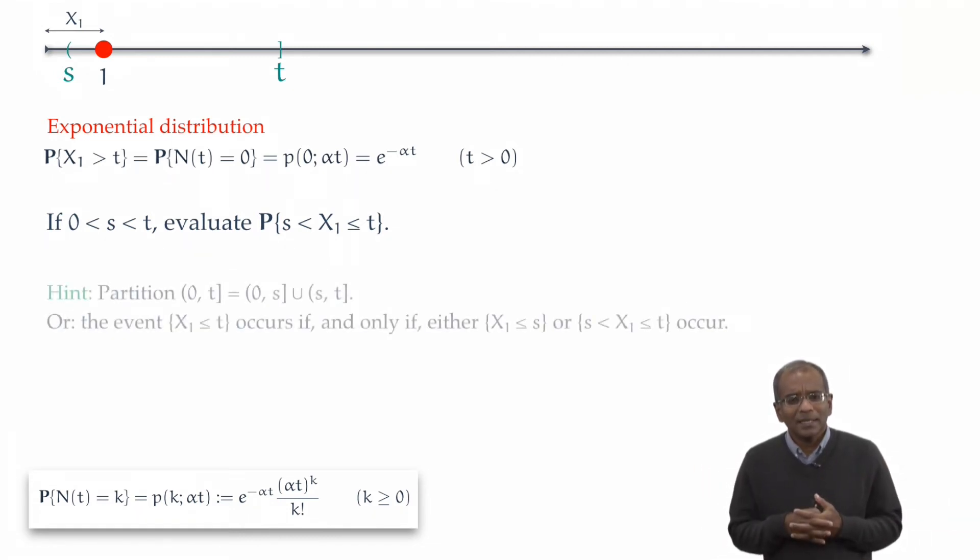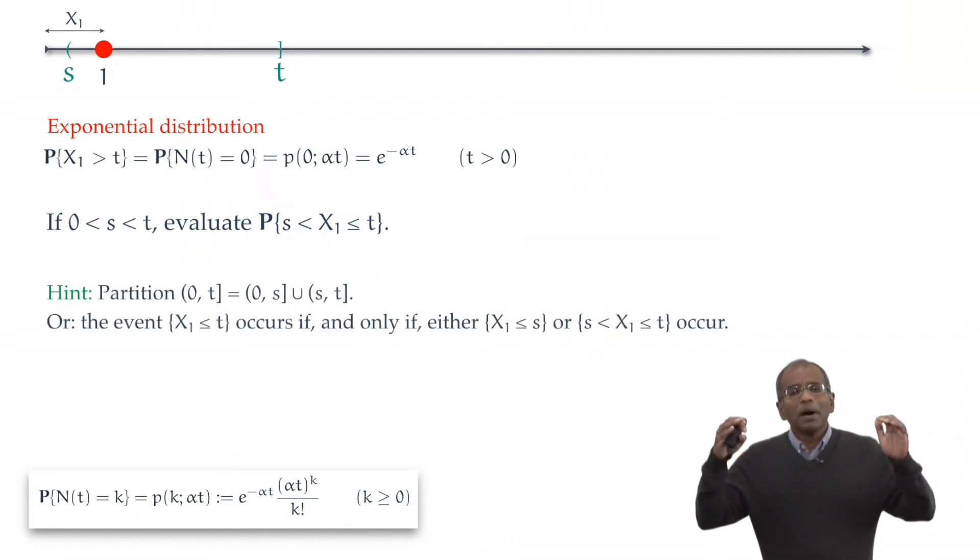Here is a hint. We may partition the interval from 0 to t into two intervals: an interval from 0 to s, and a disjoint interval from s to t. Or, if you want to put it in probabilistic terms, the event that the first arrival occurs at or before t is the same as saying that one of the two events occur, to wit,